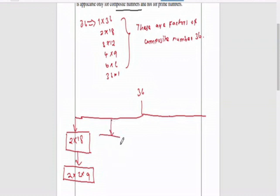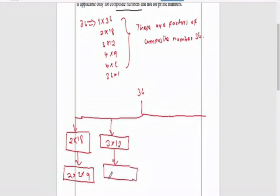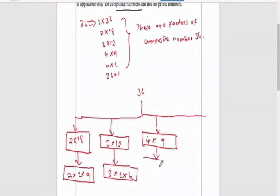Next number: 3 into 12. Number 3 is the least odd prime number. But it is mixed with number 12, which is a composite number. So we have to rewrite. So, 3 into 2 into 6. Next: 3 into 4 into 4 into 2 into 3. We have to rewrite number 4 into 9 in prime factorization.